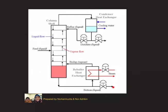The product at the bottom is the bottom product, and the product at the top of the column is called the distillate.